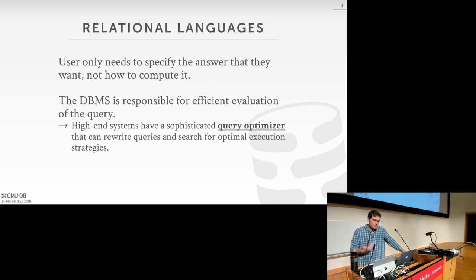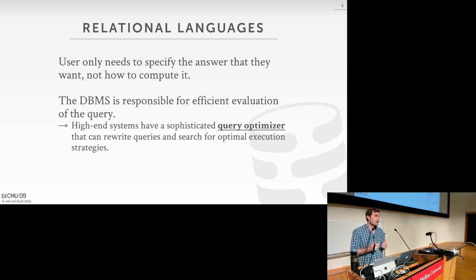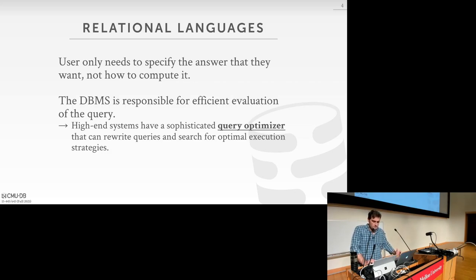The way the DBMS figures this out is through a sophisticated process called query optimization. There's a specific component of the DBMS software stack called the query optimizer that takes a query you write and figures out essentially the best way to execute it. It's a detailed search process where you search over different equivalent ways of executing a plan to find the most efficient one. This is one of the most difficult and time-consuming parts of building a DBMS, and where a lot of engineering effort goes.